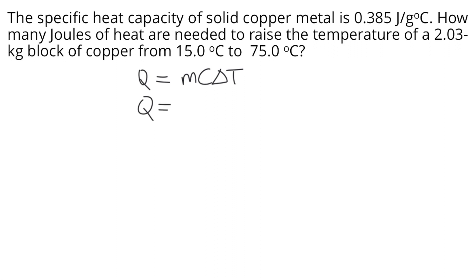M stands for the mass. In the problem, the mass given is 2.03 kilograms. But when you look at the specific heat capacity, the unit is joules per gram degree Celsius. So we need to make the units uniform and convert 2.03 kilograms into grams.